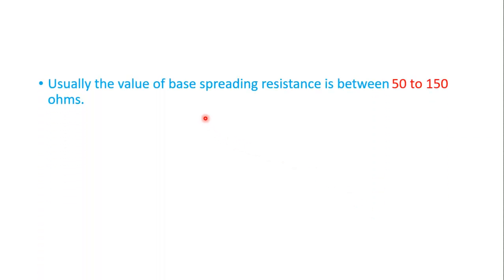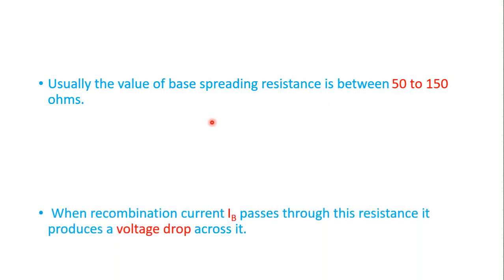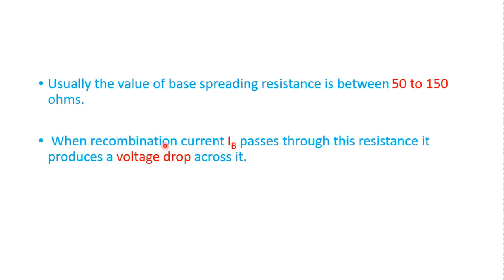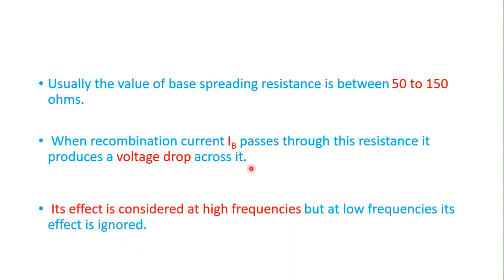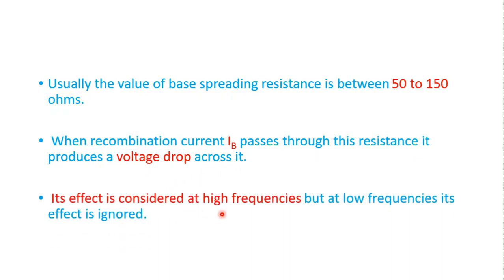Usually the value of base spreading resistance is between 50 to 150 ohms. When the recombination current IB passes through this resistance, it produces some voltage drop across it. Its effect is considered at high frequencies, but at low frequencies the effect of base spreading resistance is ignored.